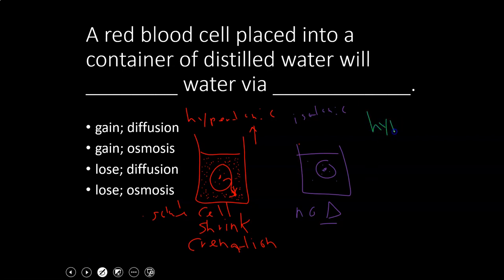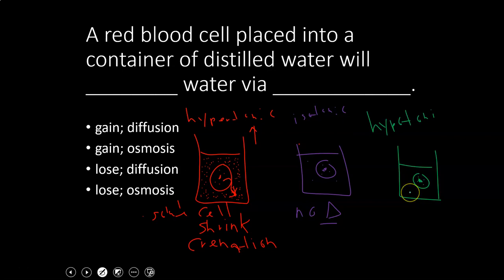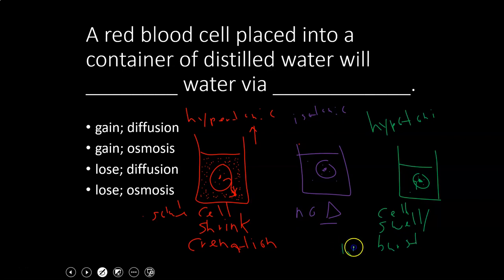Hypotonic means the solution outside has fewer solutes. Because there's more water outside the cell, water will osmose into the cell and the cell will swell. This is a problem for animal cells because we don't have a cell wall to provide rigidity — only a fluid membrane. If we're in a very hypotonic environment, the cell can possibly burst, which is called lysing.